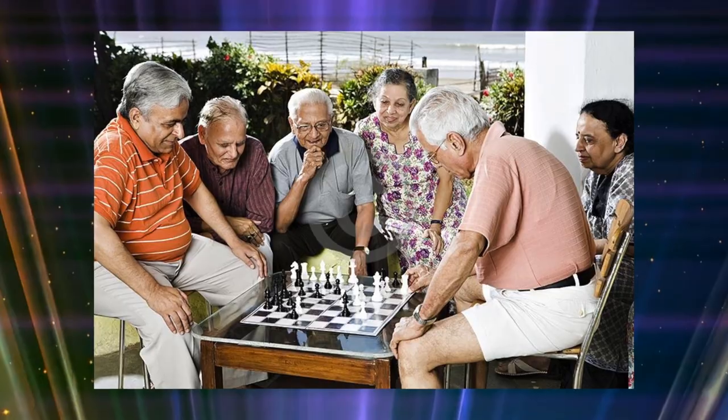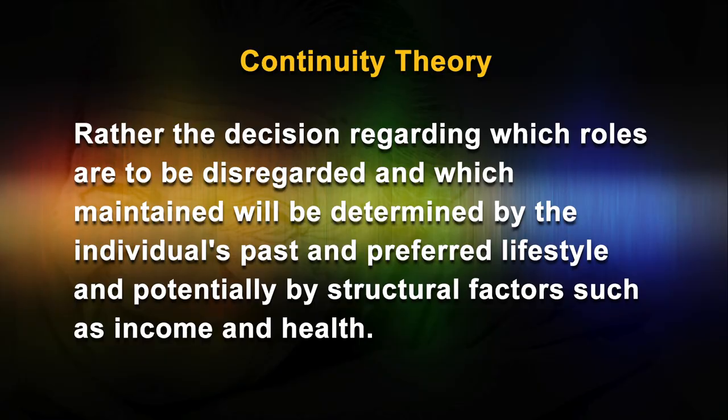Continuity theory, in contrast, starts from the premise that the individual will try to preserve the favored lifestyle for as long as possible. It suggests that adaptation may occur in several directions according to how the individual perceives her changing status. The theory is rather less dogmatic in that it does not assert that one must disengage or become active in order to cope with aging. Rather, the decision regarding which roles are to be disregarded and which maintained will be determined by the individual's past and preferred lifestyle, and potentially by structural factors such as income and health. Unlike activity theory, this approach does not assume that lost roles need to be replaced.